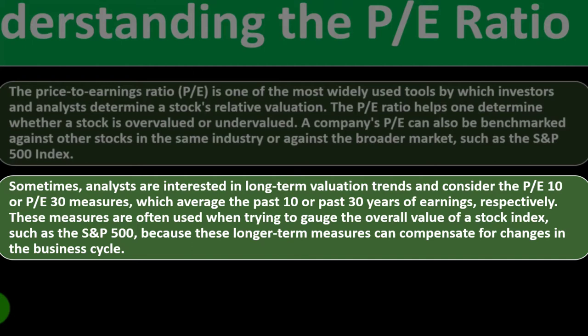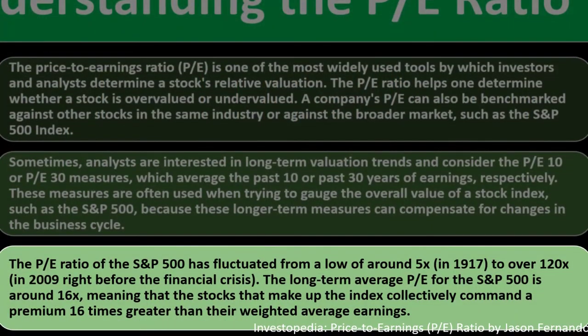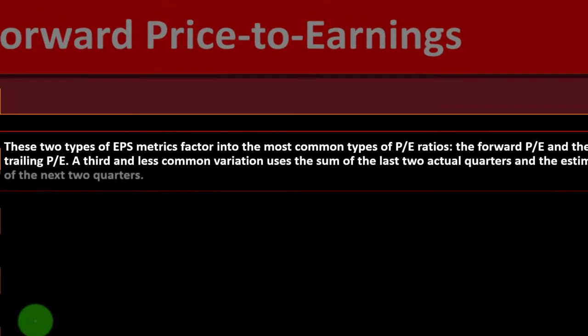Sometimes analysts are interested in long-term valuation trends and consider the PE 10 or PE 30 measures, which average the past 10 or 30 years of earnings respectively. These measures are often used when gauging the overall value of a stock index such as the S&P 500, because long-term measures can compensate for changes in the business cycle, helping grasp long-term trends through the cycles of good and bad times for particular companies and sectors.